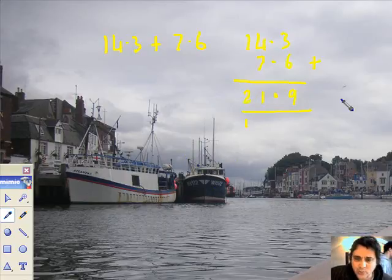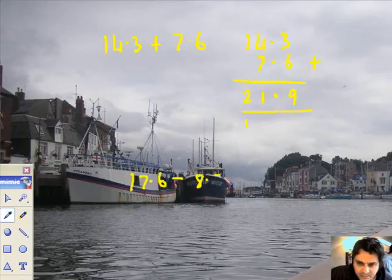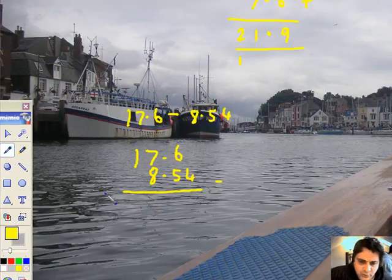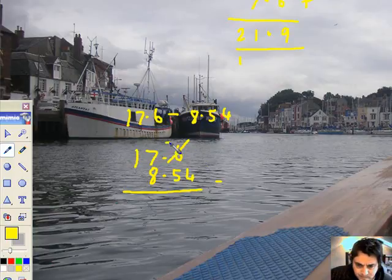We'll do a little subtraction one now. We've got 17.6 take away 8.54. So line it out properly, 17.6 and 8.54. Well look, as usual, you have to take off the 6 and go 5 and borrow 1 across there, we've got a 0 there, so give it the 1.